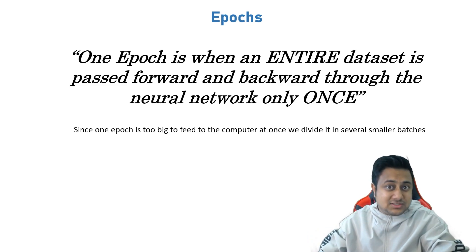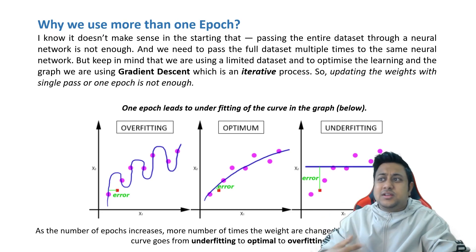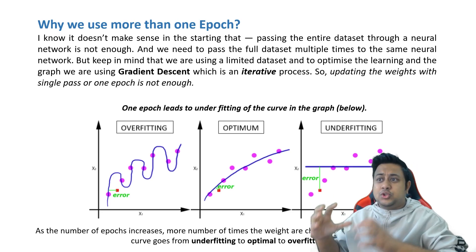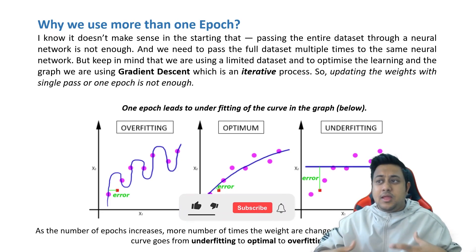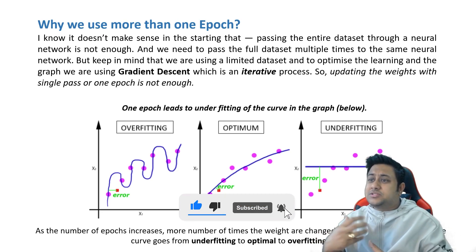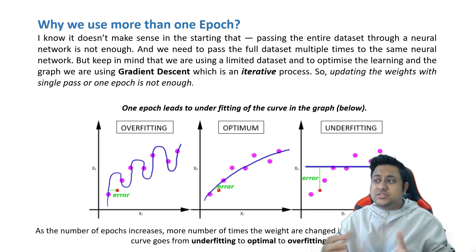Why do we use more than one epoch? I know it doesn't make sense in the starting that passing the entire dataset through a neural network is not enough, and we need to pass the full dataset multiple times. But keep in mind that we are using a limited dataset, and to optimize the learning and the graph, we are using gradient descent, which is an iterative process.